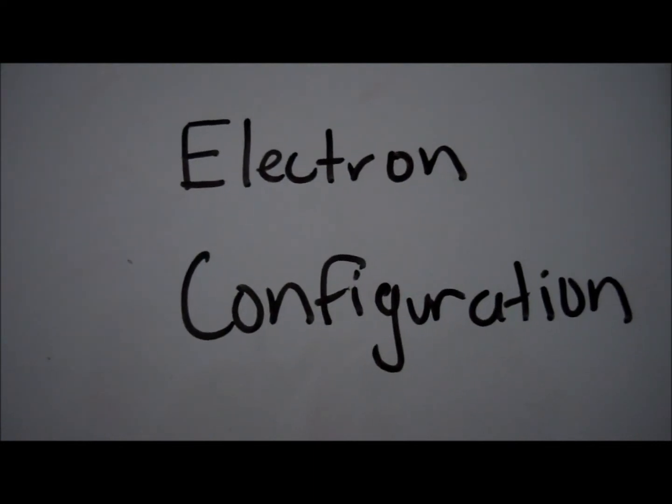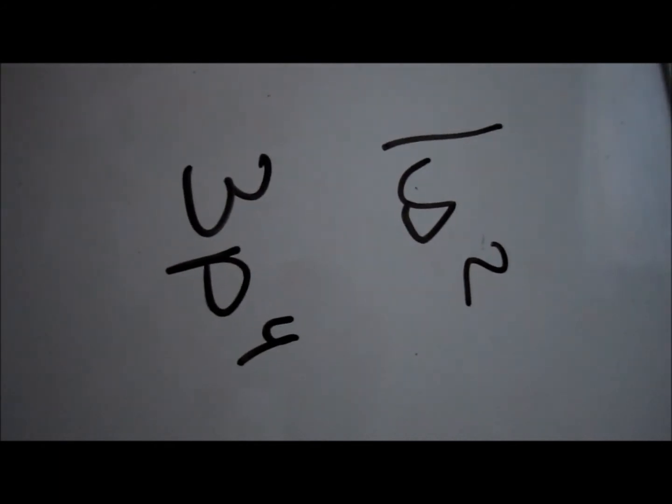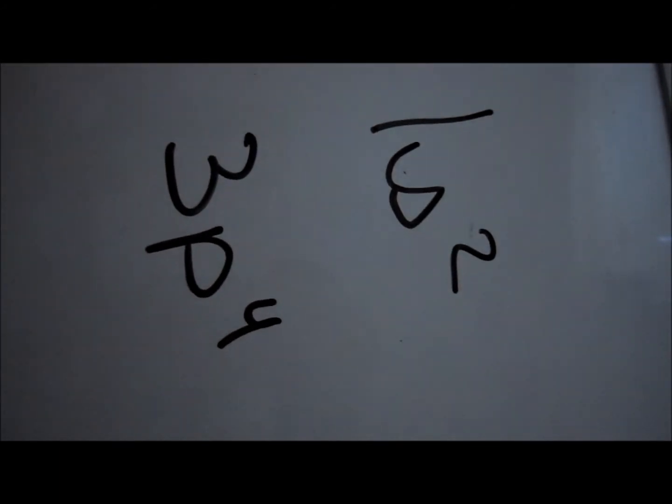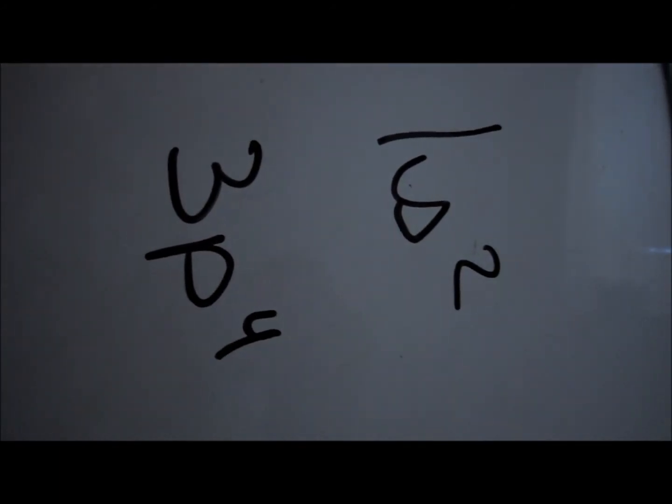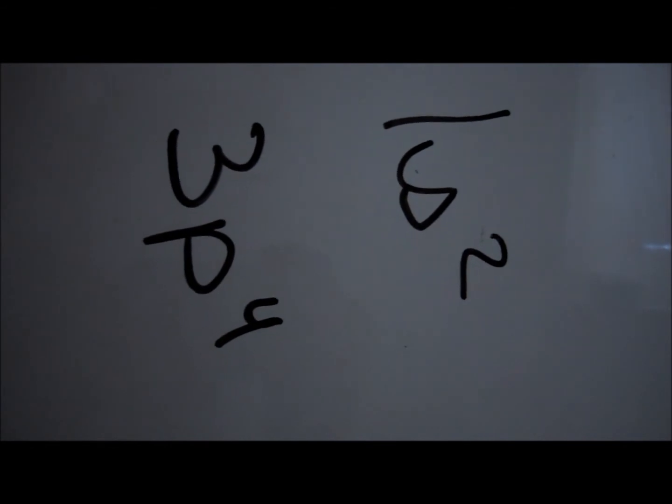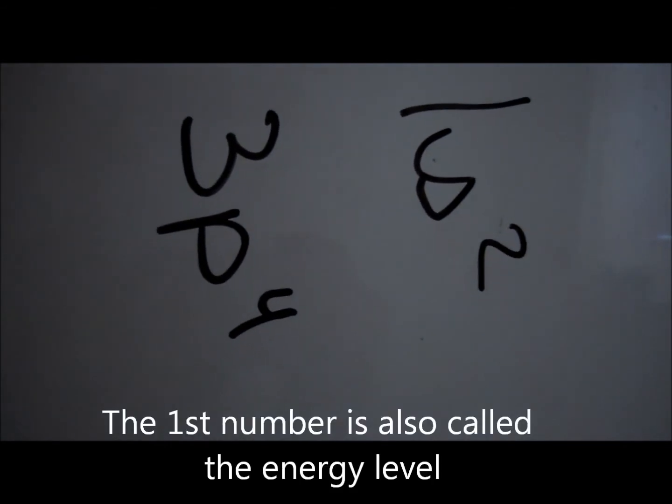To write the electron configuration for an element, find the number of electrons and organize them with notation that looks like this. The central letter is the shape of the orbital, the second number is the number of electrons in that orbital, and the first number tells you how many times that type of orbital has appeared.